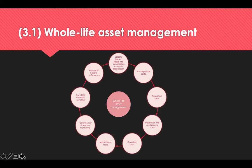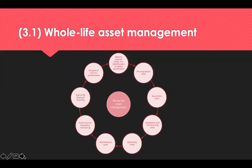can be made about the options which provide the best value for money within the organisation. It's a continuous process that monitors performance of an asset once it's in situ and calculates the optimum time to replace or refurbish the asset. There are eight elements that form the cycle of whole life asset management. The first is to identify the need.